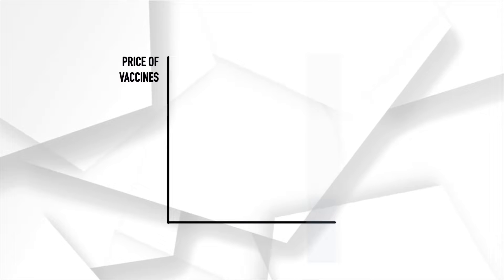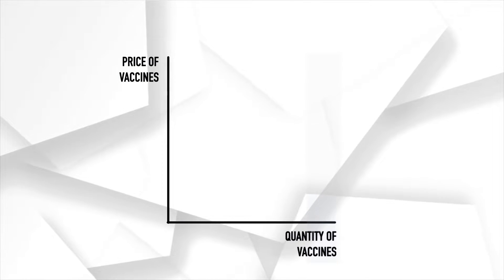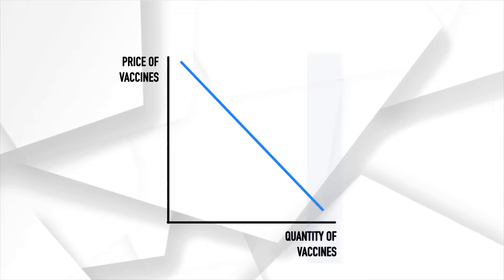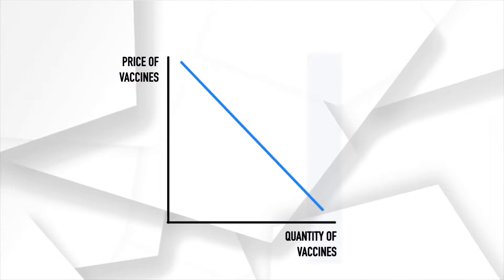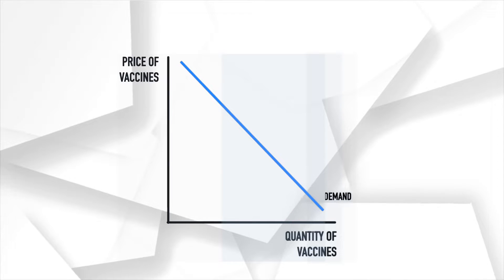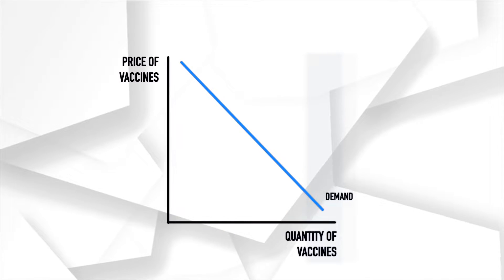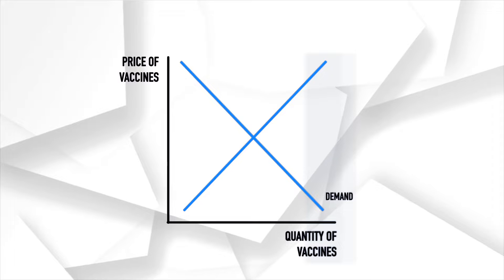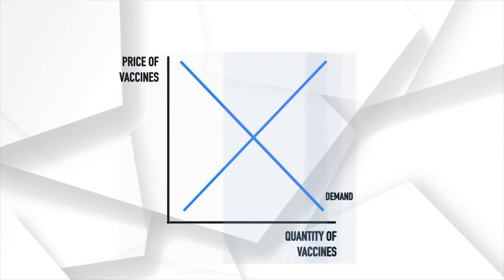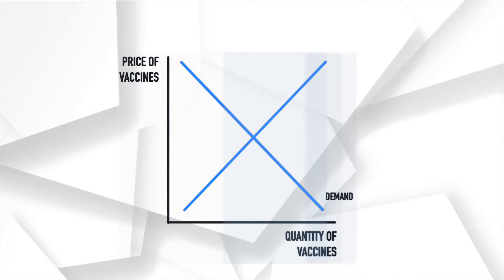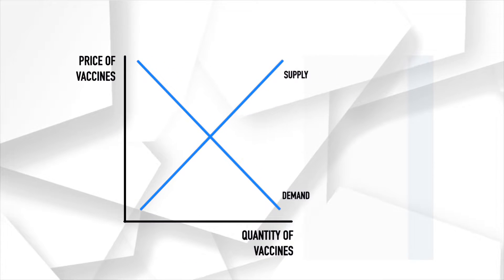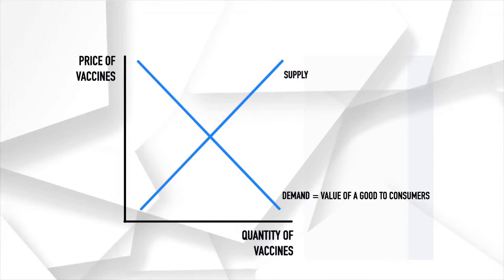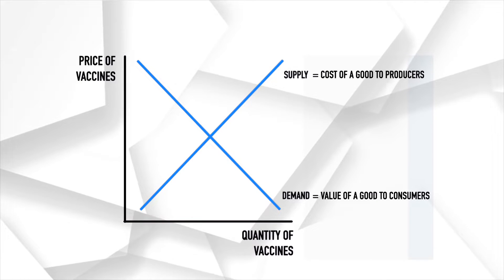Now let's consider the supply and demand curves of vaccines, which is a good that has a positive externality. In a typical market, as the price of a good falls, the quantity demanded rises because more buyers are willing to buy a good at a lower price. Therefore, the demand curve slopes downward. Similarly, as the price of a good rises, the quantity supplied rises because more producers are willing to supply a good at a given higher price. Therefore, the supply curve slopes upward. The demand curve shows the value of a good to consumers, while the supply curve shows the cost of the good to producers.